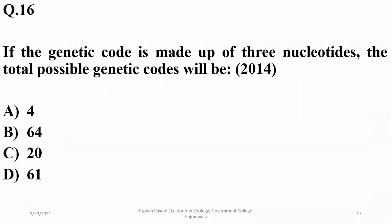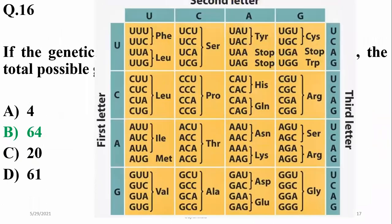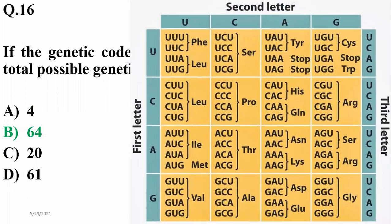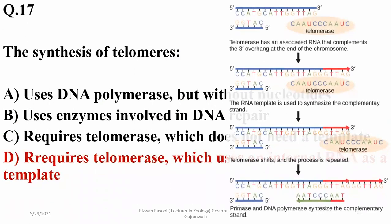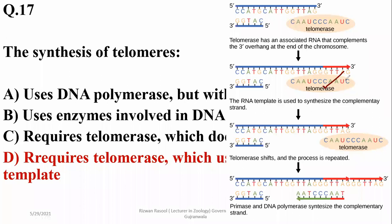Number 16: if the genetic code is made up of three nucleotides, the total possible genetic codes will be 64, because there are four types of nucleotides and 4 to the power of 3 equals 64. The synthesis of telomeres requires the telomerase enzyme, which uses an internal RNA as a template for the synthesis of the telomere portion of DNA. Telomerase uses an RNA template to synthesize the complementary strand.